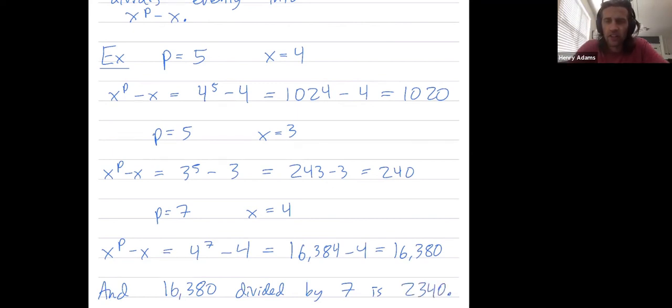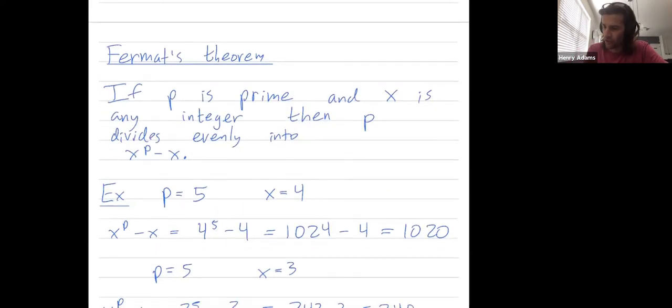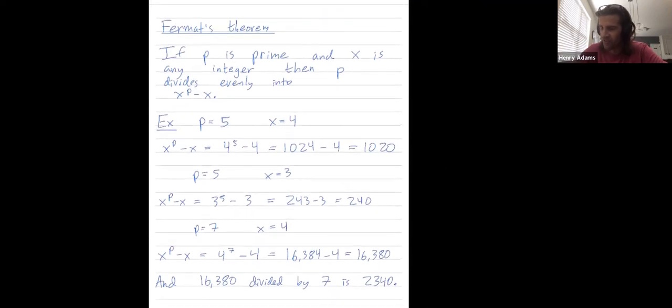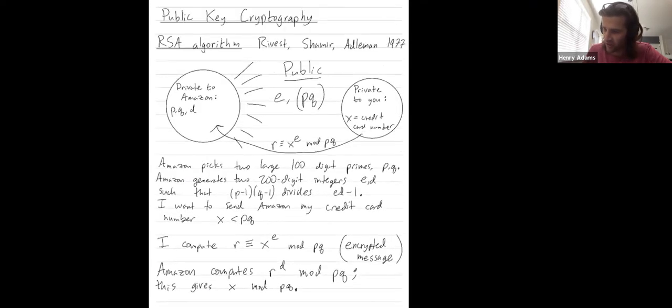So Lagrange's theorem is a really important, or sorry, Fermat's theorem is a really important theorem in number theory. And you can phrase this using the language of modular arithmetic, but we'll use this in our verification that when Amazon uses the RSA algorithm to decrypt your secret message, that algorithm indeed works.